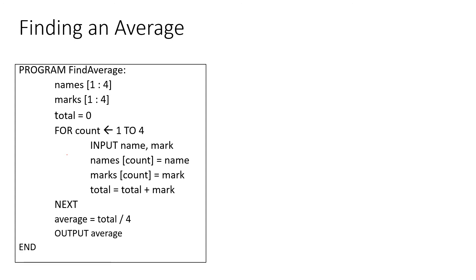What if we want to find the average of all the marks? Program FindAverage: two arrays, names[1:4] and marks[1:4], a total variable set to zero, a for loop counting from 1 to 4. We input name and mark, set names[count] = name and marks[count] = mark, then total = total + mark. After the loop finishes, average = total / 4, and we output the average.